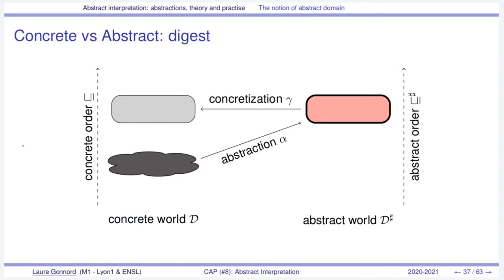We often use this kind of scheme to depict the abstract world and the concrete world. We depict in dark grey the set of concrete values of the program. After abstraction, this concrete value becomes pink, and after concretization we are supposed to have a grey behaviour that is bigger than the original grey behaviour. To define this notion of bigger we need a concrete order and an abstract order which will be defined in the abstract world.